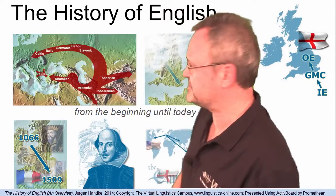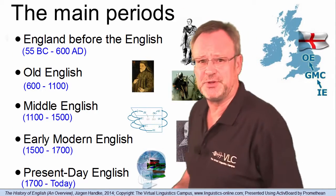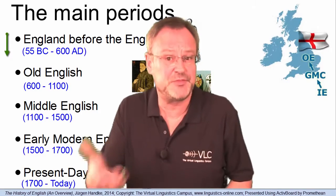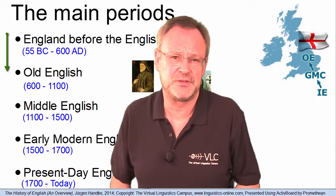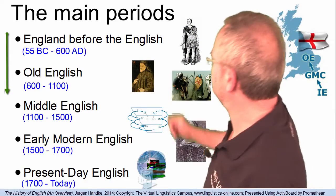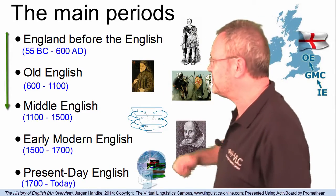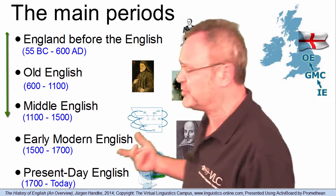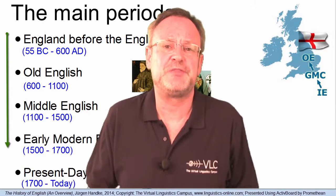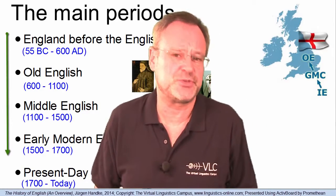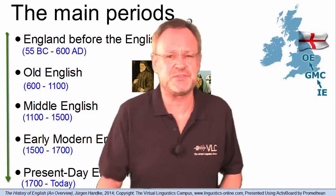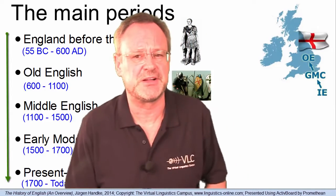The development of English can be subdivided into five periods: the beginning, that is, the time before the English arrived; the Old English period from 600 to 1100; the Middle English period from 1100 to 1500; the Early Modern English period from 1500 to 1700; and the period of present-day English from 1700 until today.